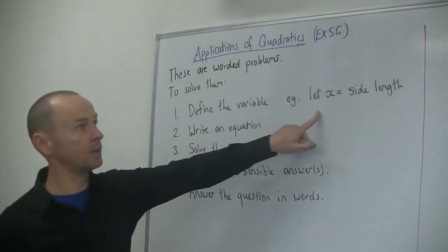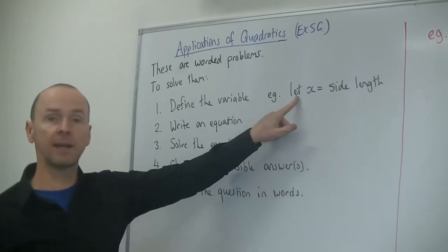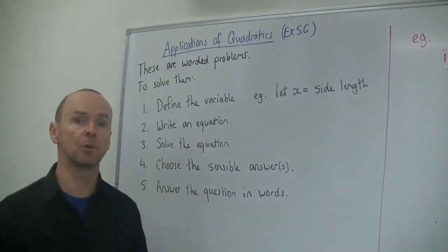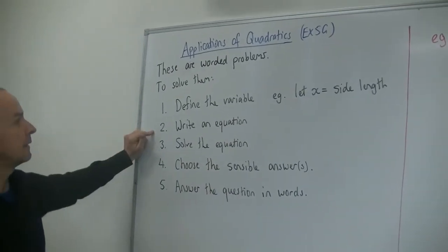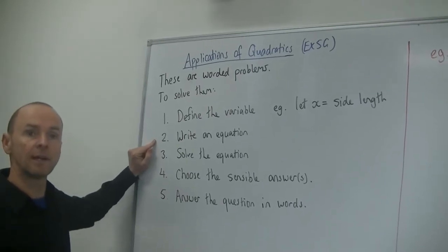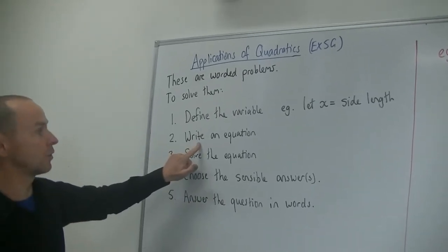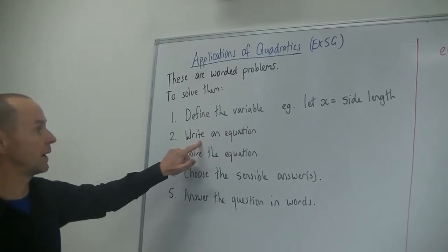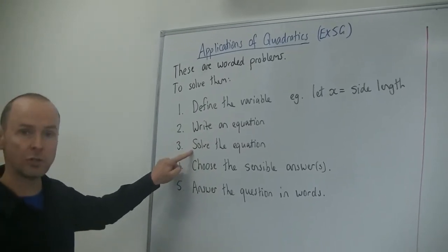Say let x equal, if it's the side length, write down side length. Let x equal the age of Tom or something, whatever you're trying to find. Next thing, write an equation. That's where you use the words that you're reading and see if you can change that into an equation. Solve the equation using our maths. You've got the skills to do that.